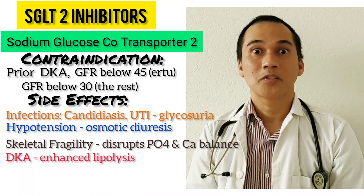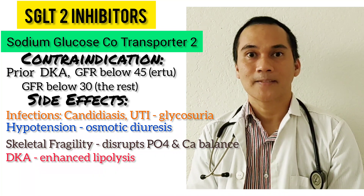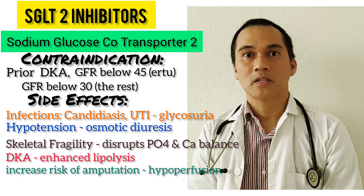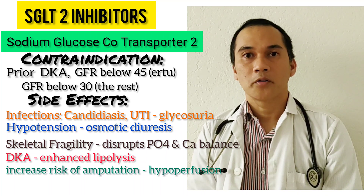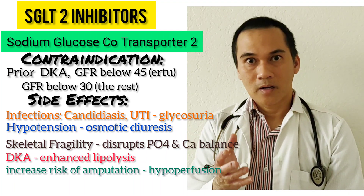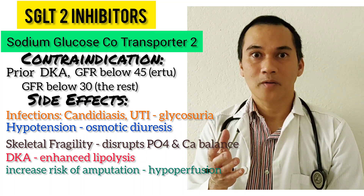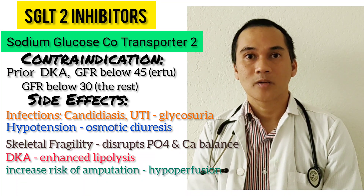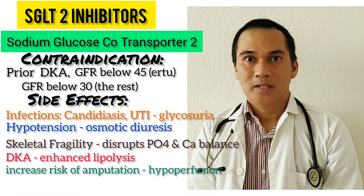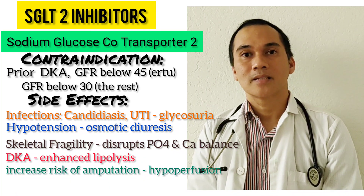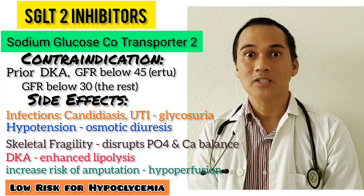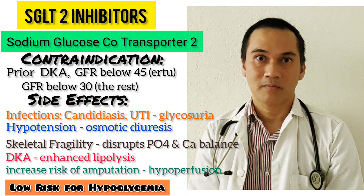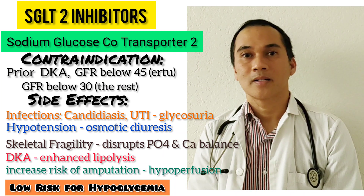This medication also increases risk for amputation, especially in patients with PVD or neuropathy, because the osmotic diuretic effect can cause hypoperfusion to the lower limbs. Because this medication does not affect insulin secretion or stimulation, it has a low risk of hypoglycemia — unless combined with sulfonylureas or insulin.